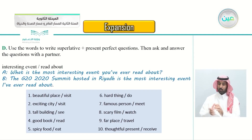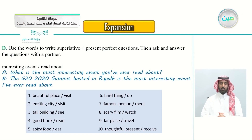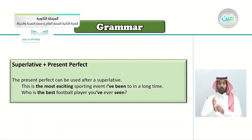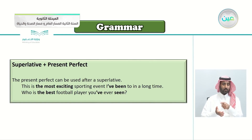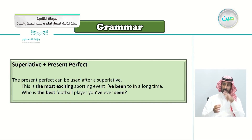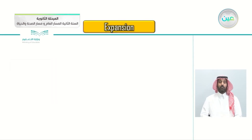We have to write a question using the superlative plus present perfect, then answer also using the present perfect. For example: 'This is the most exciting sporting event I have been to in a long time.' Or as a question: 'Who is the best footballer you've ever seen?' We begin with the superlative — 'the best', 'the most exciting' — then add the present perfect — 'you've ever seen'.